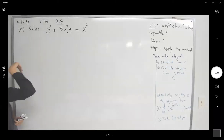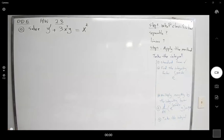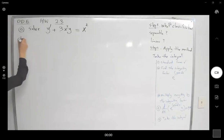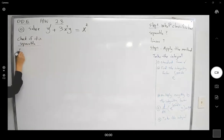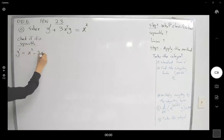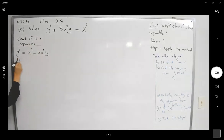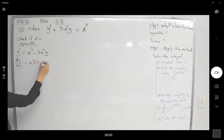Question 5 says solve the following differential equation. Check to see if it's separable or not. We have y prime and on the right-hand side you can write it as x squared minus 3x squared y. Here you can factor out x squared, giving dy over dx equals x squared times 1 minus 3y.